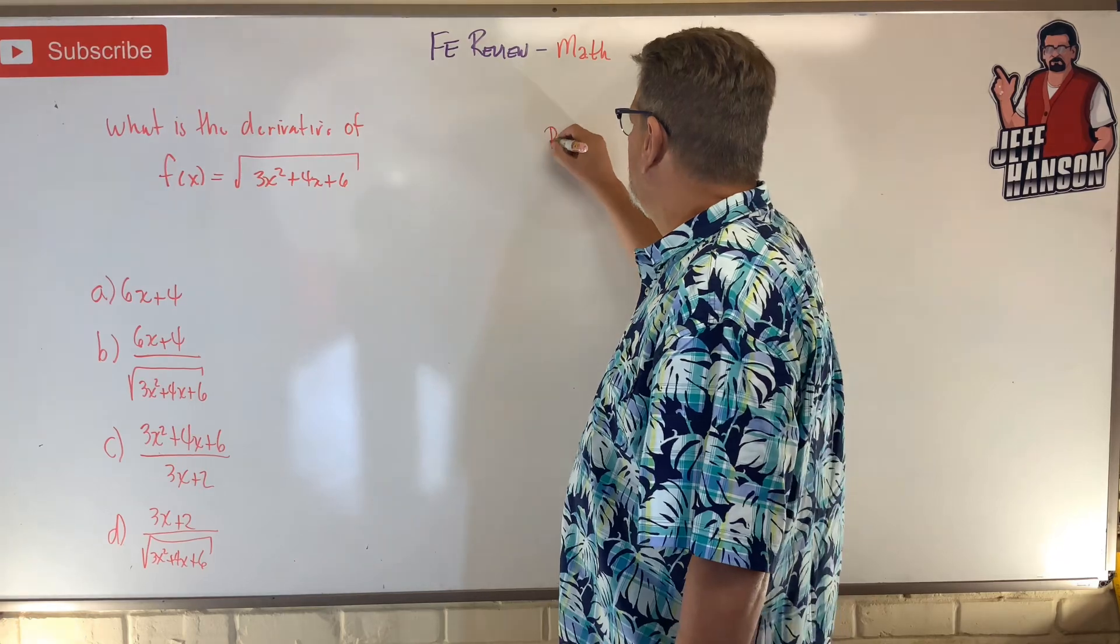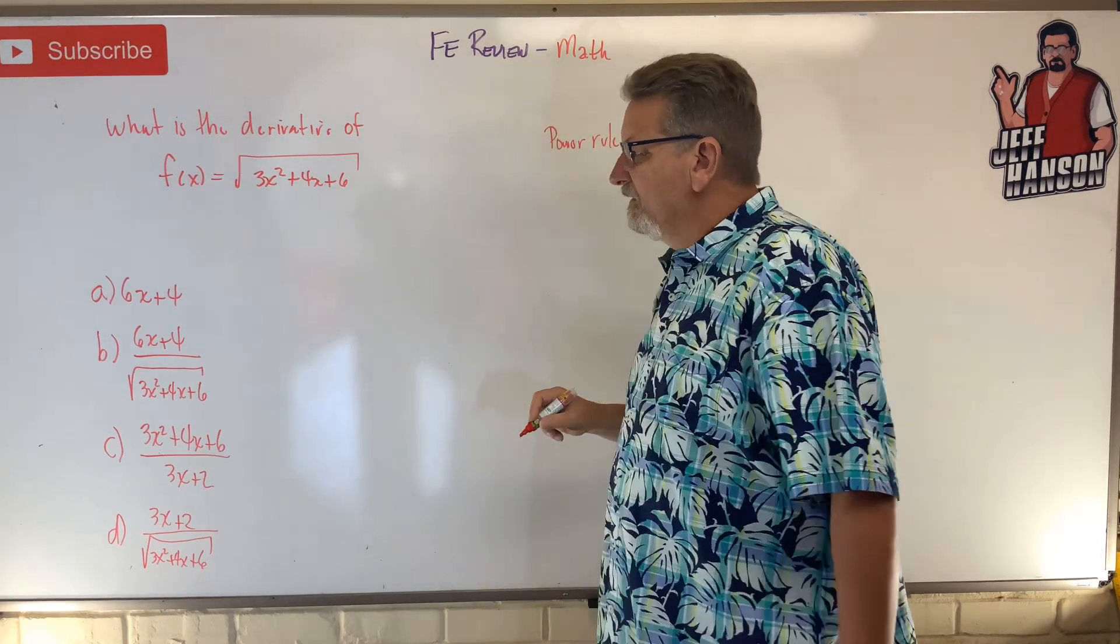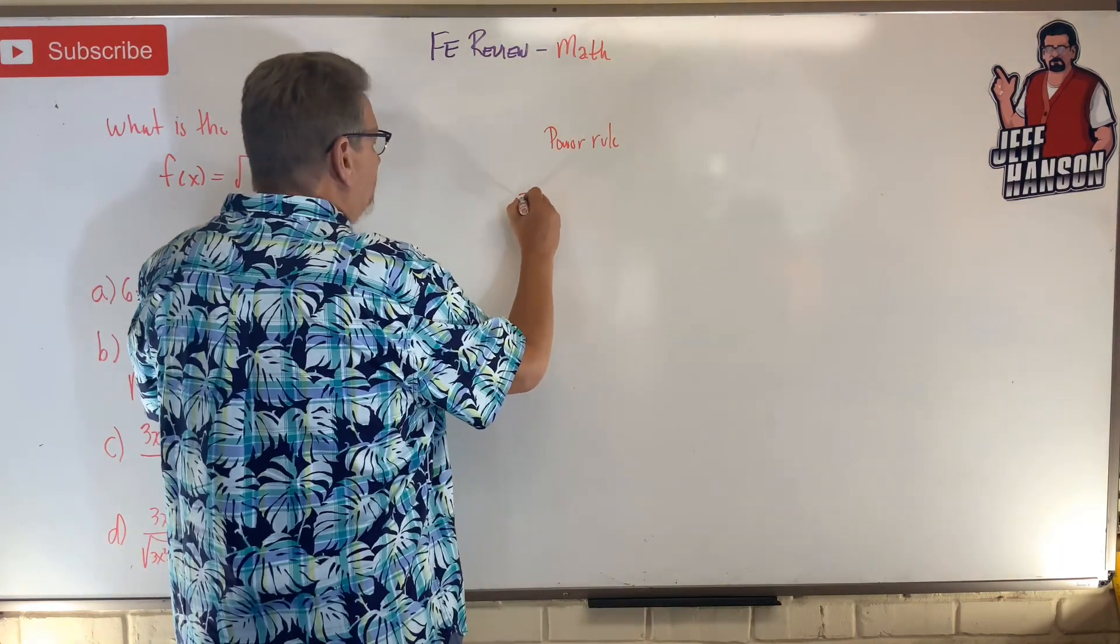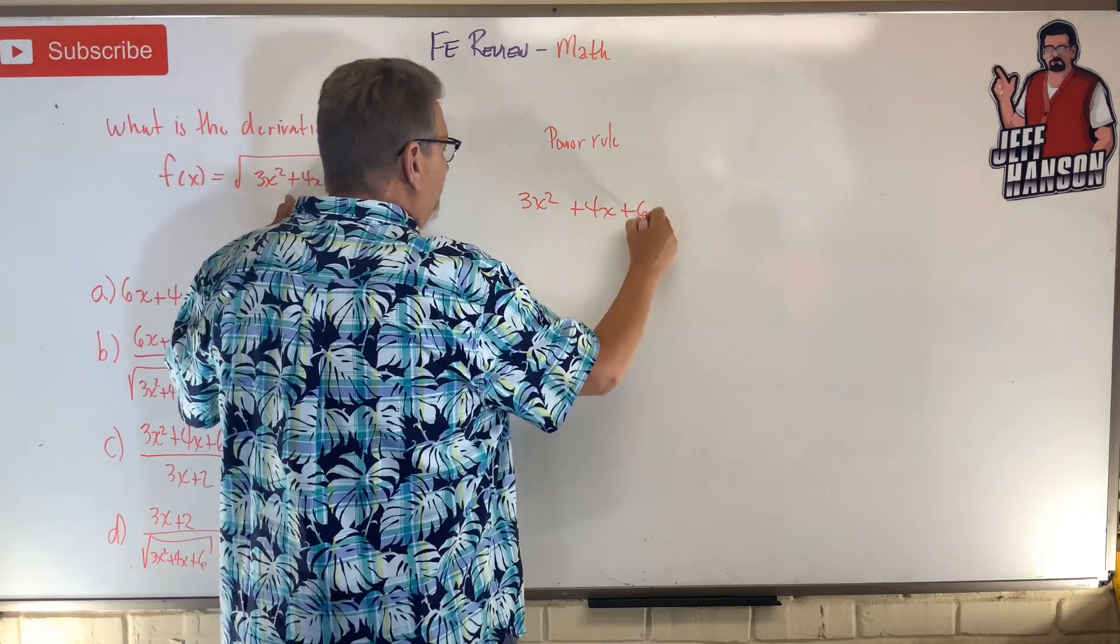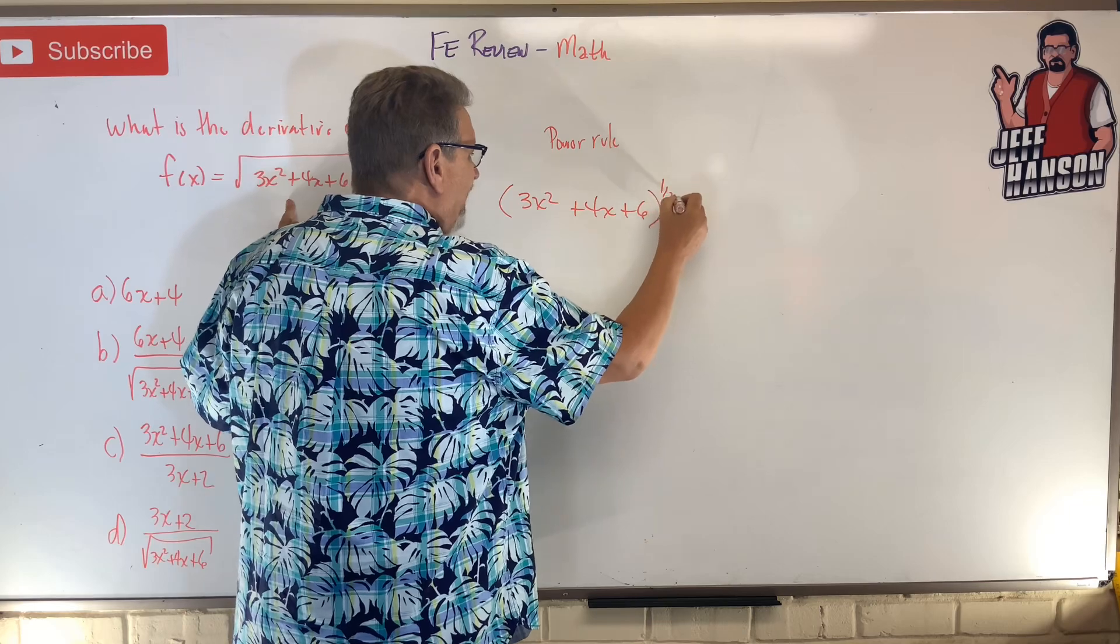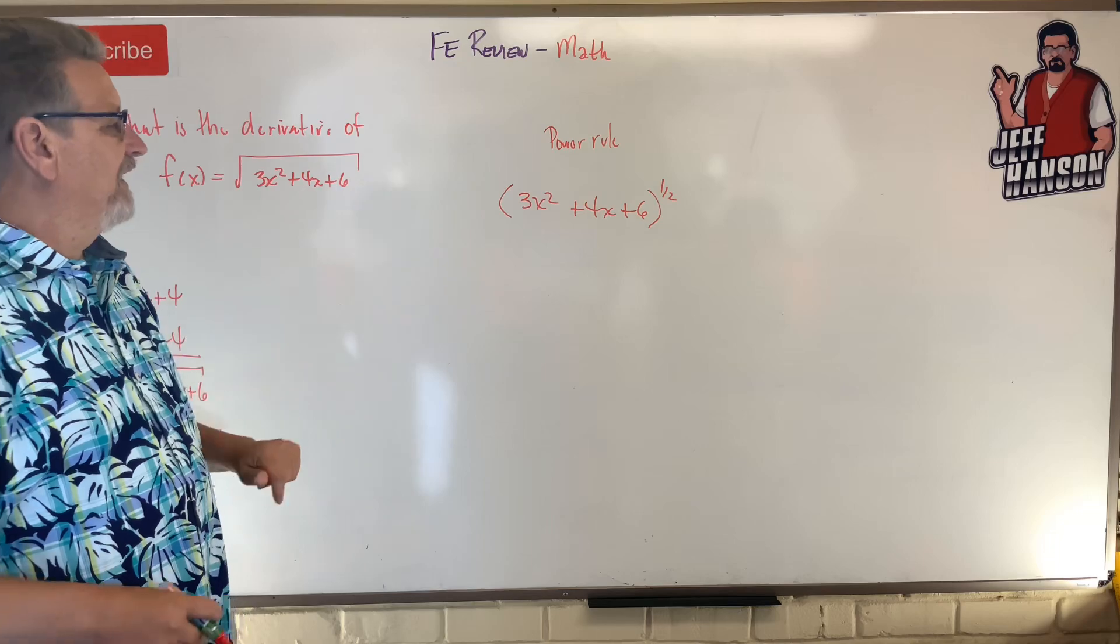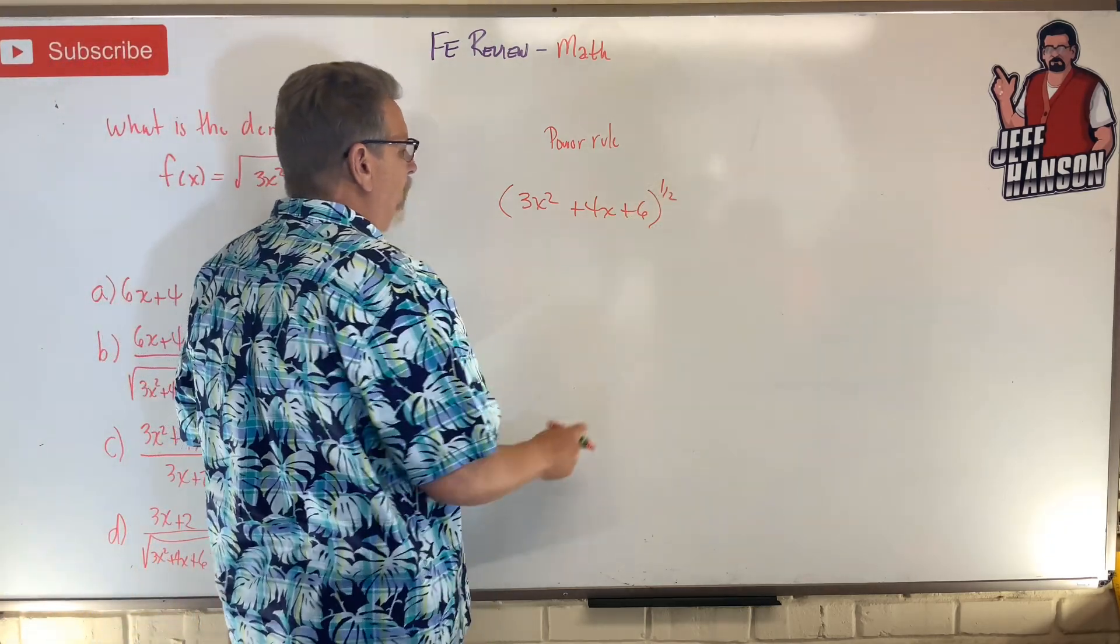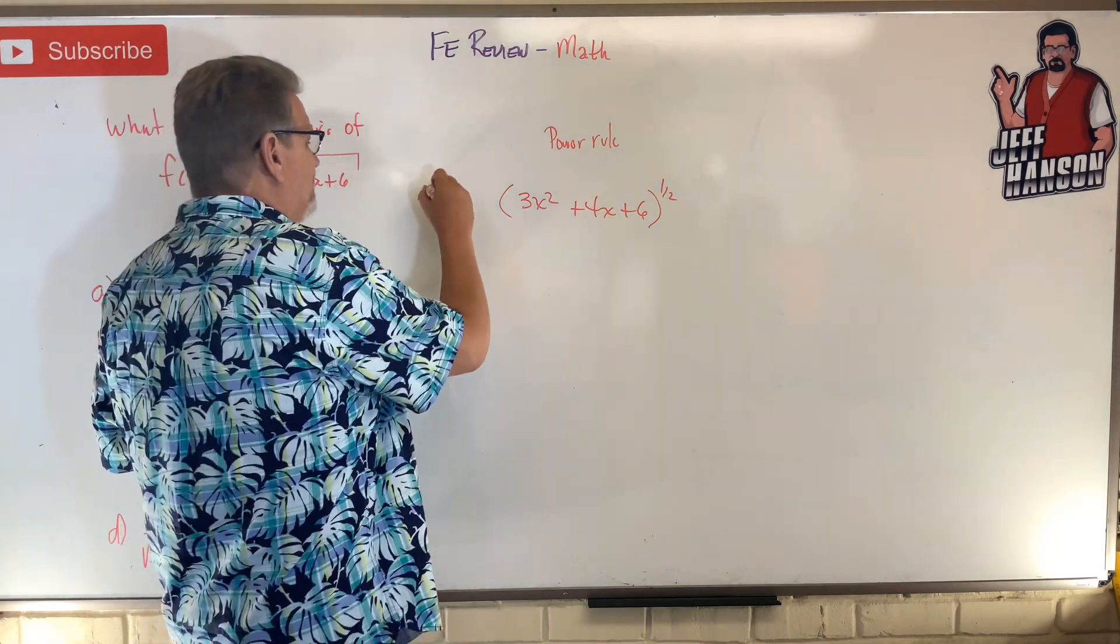Do you remember this? Because what we have here, really what we have here, is 3x squared plus 4x plus 6 to the 1/2. Always get rid of the radical and turn it back into a power, a fraction, an exponent.